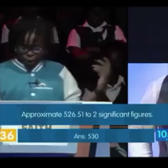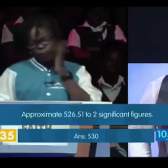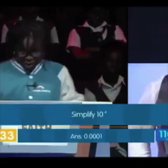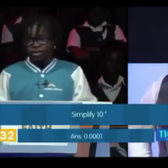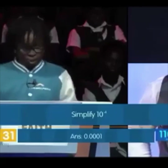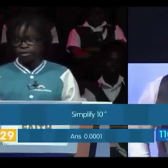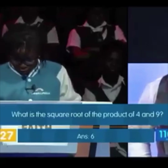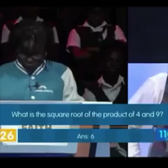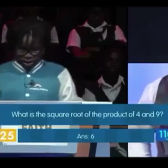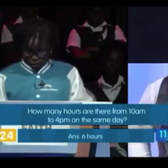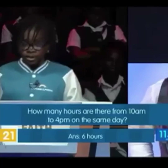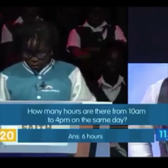Approximate five to five — five point five, five hundred and thirty. Correct. Simplify terms for minus four: zero point zero zero zero zero one. Incorrect. What is the square root of the product of four and nine? Six. Correct. How many hours are there from 10 a.m. to 4 p.m. on the same day? Six. Correct.